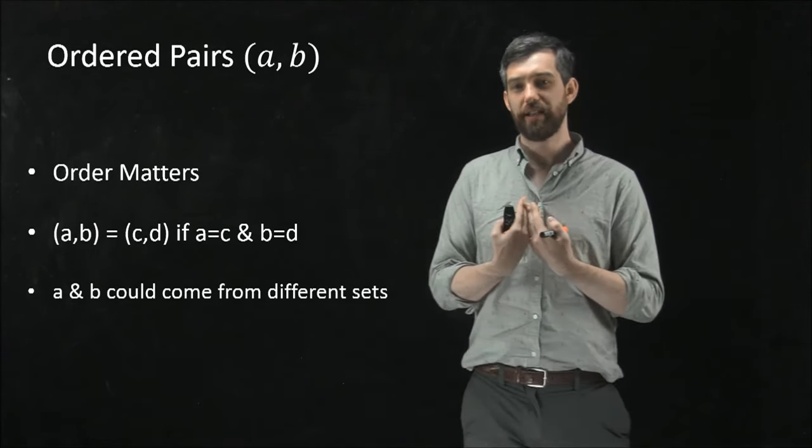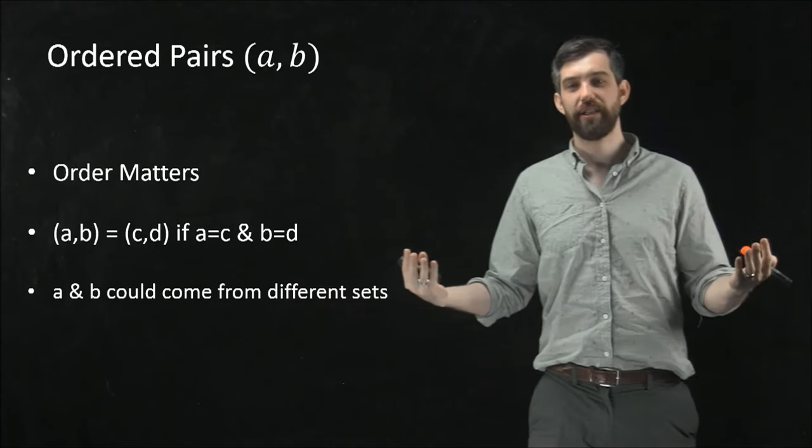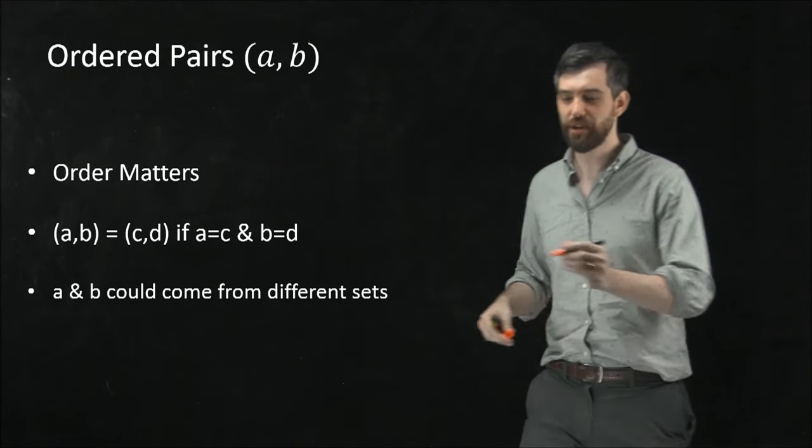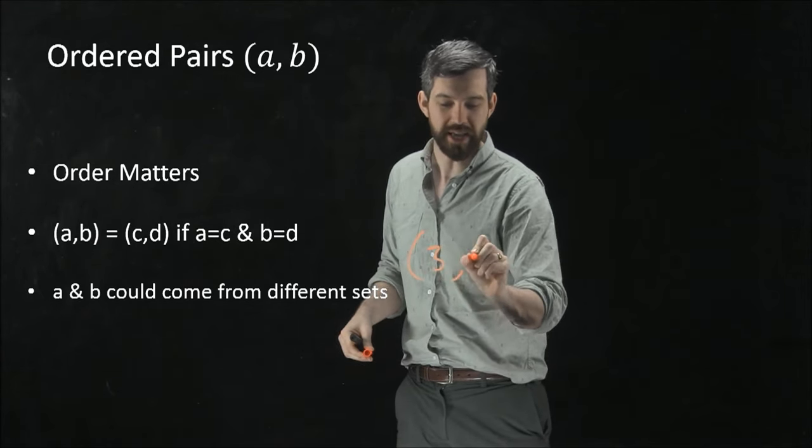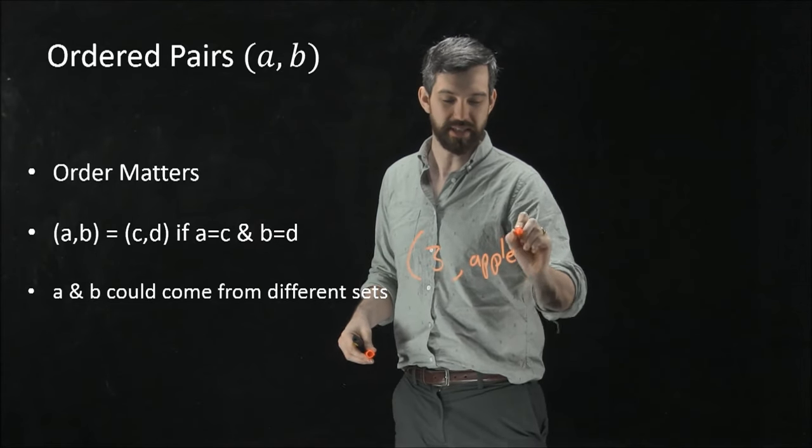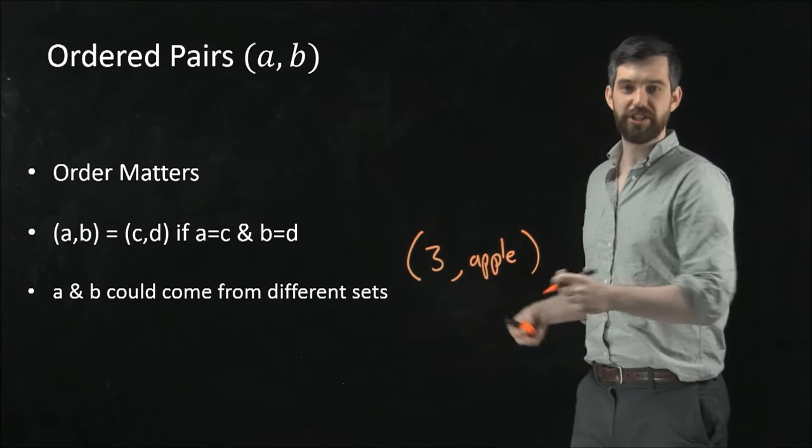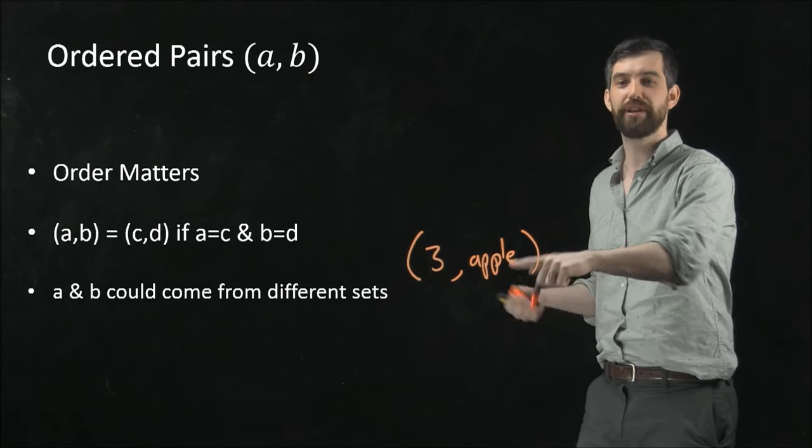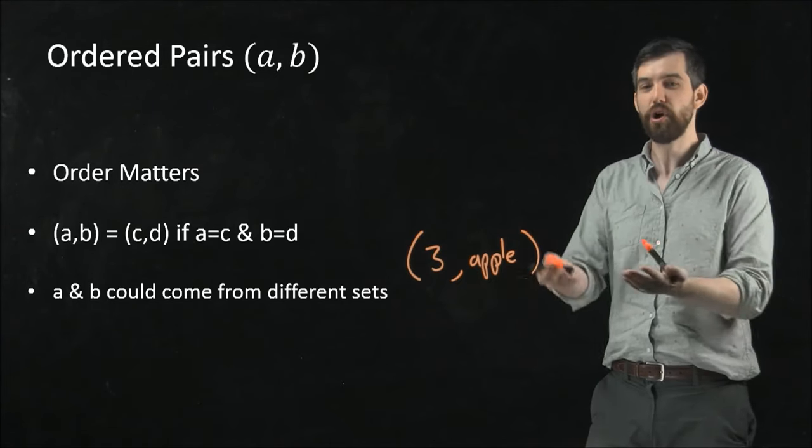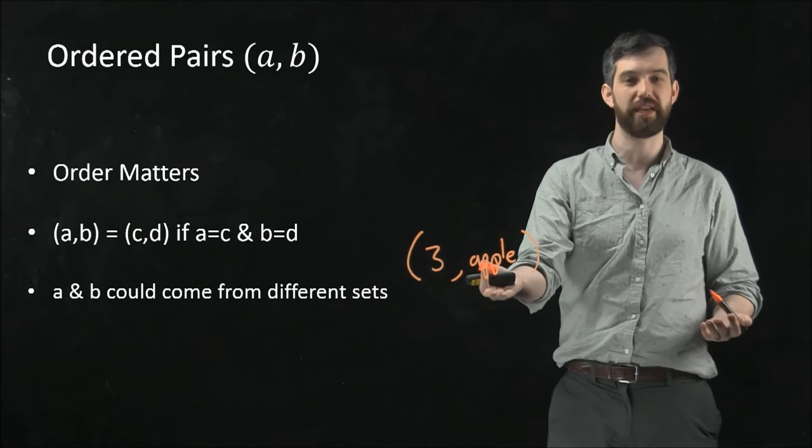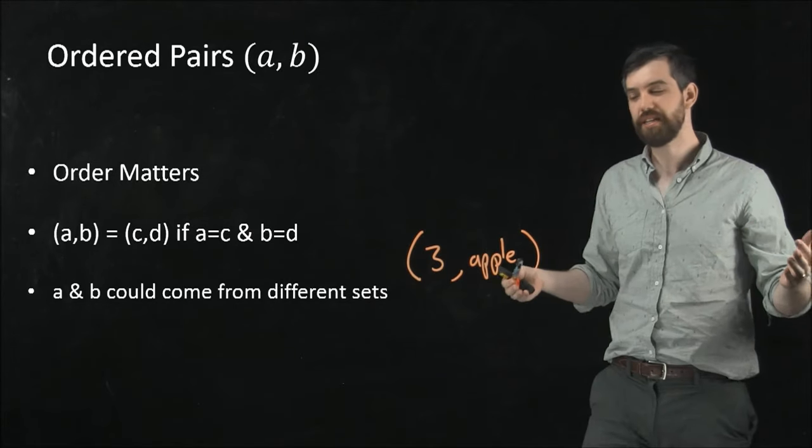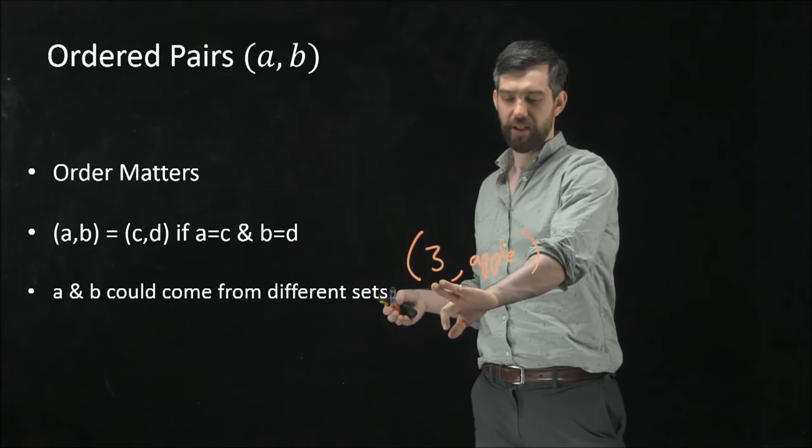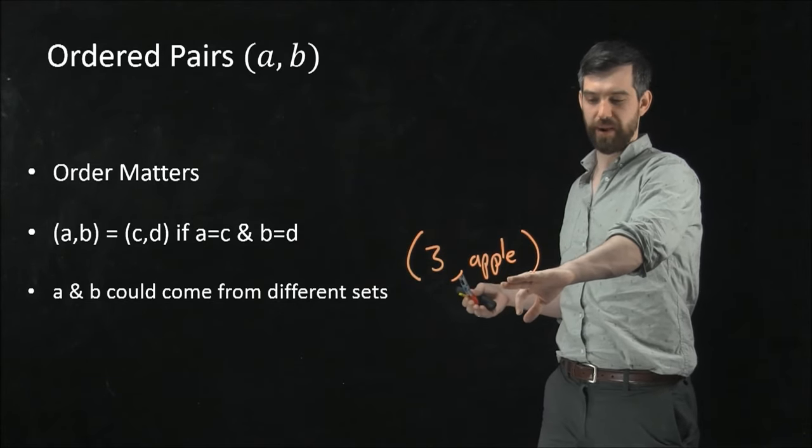It also should be noted that the A and the B here, they could come from entirely different sets. I could consider a pair that was like 3 apple, because the first element is just a number, it comes from the set of integers, and the second element could come from the set of fruit. There's no restrictions here that these two different things look at all alike.